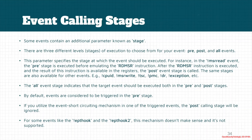In the pre-stage, we have the ability to ignore the event. We can use the previously mentioned mechanism for short-circuiting or event ignorance. If we ignore or short-circuit the event, then the post calling stage won't be called and the post will be ignored. For some events like EPT hook or EPT hook 2, this mechanism is not supported because it doesn't make sense to create a calling stage for a hook, which is simply like a breakpoint.